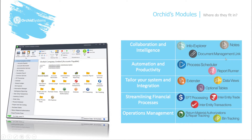The first category, collaboration and intelligence, consists of Info Explorer, our business intelligence tool. Notes are context-sensitive notes for Sage 300, and Document Management Link provides documents in a context-sensitive fashion. Automation and productivity consists of Process Scheduler and Report Runner — Process Scheduler to schedule recurring processes, and Report Runner to enable you to automate and provide easy access to Crystal Reports and General Ledger Financial Reports.